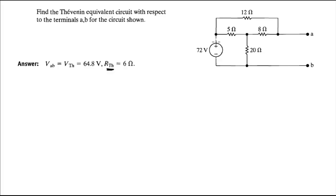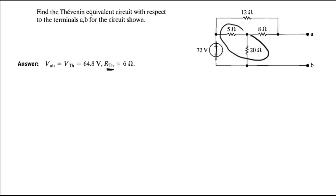To find R_Thevenin, you have to short the voltage sources. I'll do that on a separate layer so it's not confusing. When you short the voltage source and calculate the resistance, we then combine these two resistors in parallel to get the new simplified circuit.